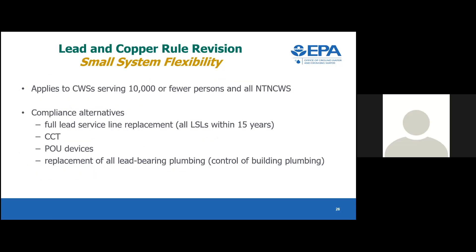There is small system flexibility that's new. It applies to all small community water systems serving less than 10,000 people and non-transients. It provides an alternative for corrosion control treatment. Full service line replacement is still there, corrosion control treatment is still there, but it also allows for installation and maintenance of point-of-use devices and replacement of all lead-bearing plumbing fixtures at every tap where water is used for human consumption.